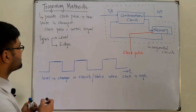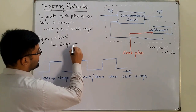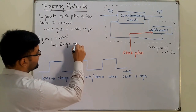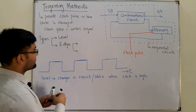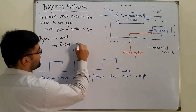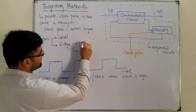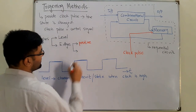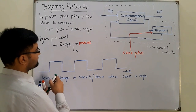For level triggering we don't have subtypes — it is only when the clock is high. Then we have edge triggering, and edge triggering has two types: positive edge triggering and negative edge triggering.